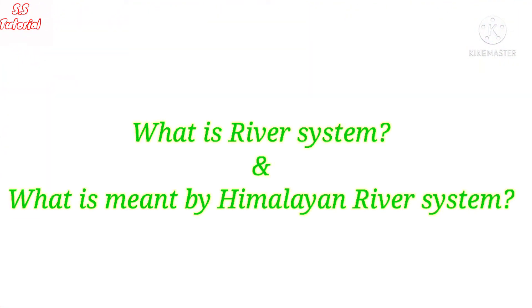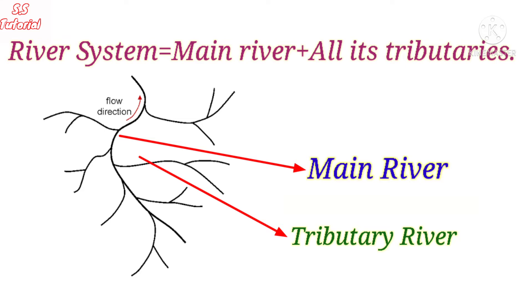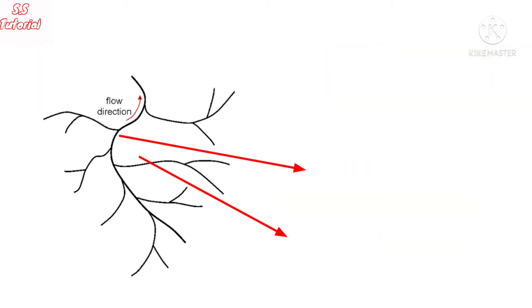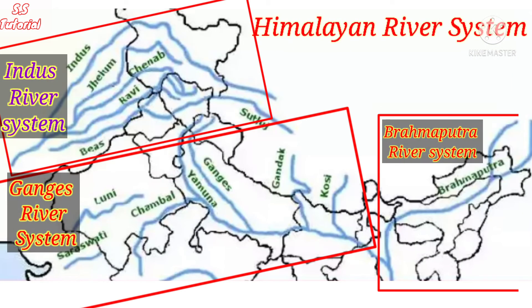Before we know about the Indus river system, we will know what is a river system and what is meant by Himalayan river system. A river system is nothing but a number of rivers which consists of one main river and all its tributaries. Sometimes a river system is also called a drainage system. All rivers which originate from the Himalayan region are called the Himalayan river system.